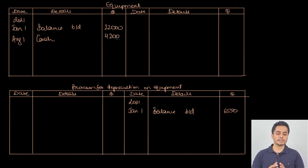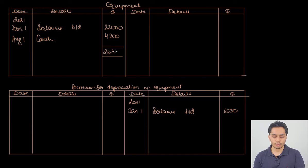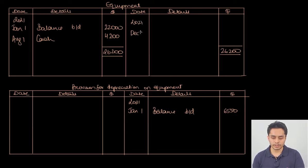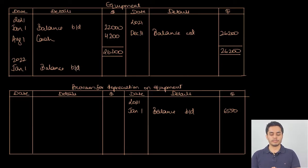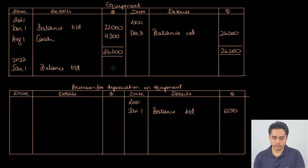There is no disposal, so no other entry in the equipment account. Balancing the account: total is 26,200. On December 31, balance carried down 26,200. Do not forget to bring down the balance — especially if specifically mentioned in the question, as you might lose marks even if the rest of the question is correct.